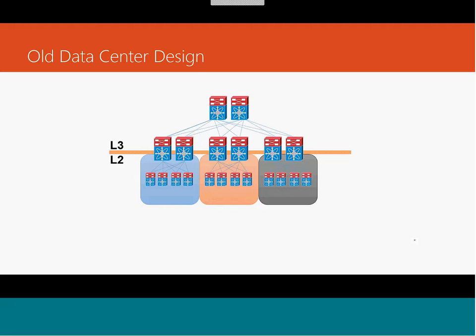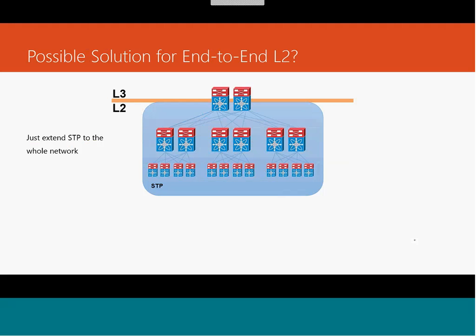A lot of protocols rely on layer two functionality — even most layer three protocols rely on layer two. If your layer two isn't there, layer three isn't going to work. In older traditional designs, all the benefits of layer two features were segregated only to the pod itself, limited to a particular data center location or segment. The alternate solution is to expand the layer two network, bringing all pods together and creating a big STP network, but that has its own challenges.